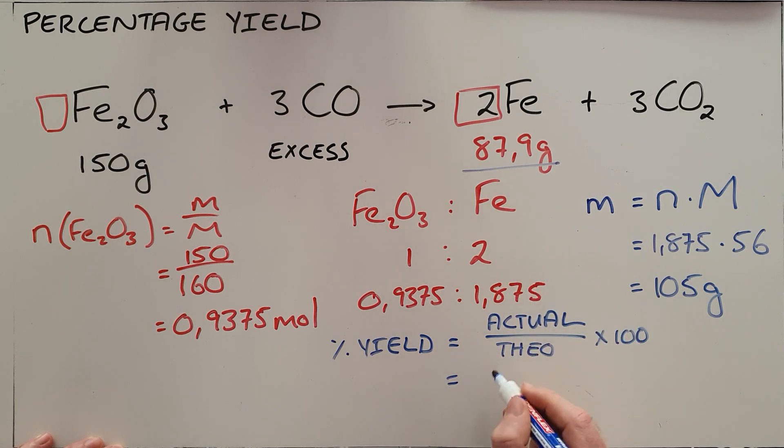We actually obtained 87.9 grams, we expected 105 grams, multiply that by 100 to get it to a percentage, and we would find that the percentage yield for this reaction is 83.71 percent. We'd also often call this the reaction efficiency—we would say that this reaction is 83.71 percent efficient, meaning it only produces 83.71 percent of what you expected to.